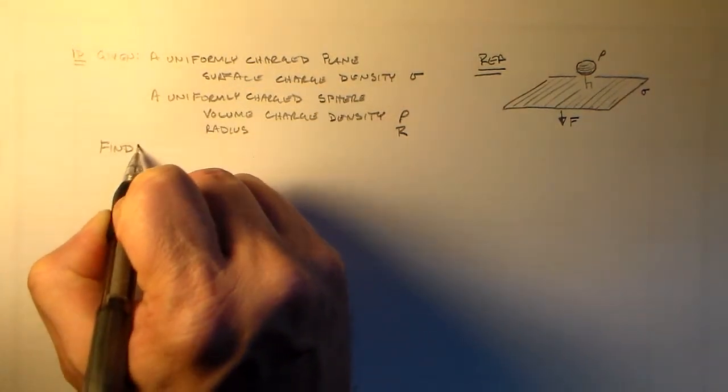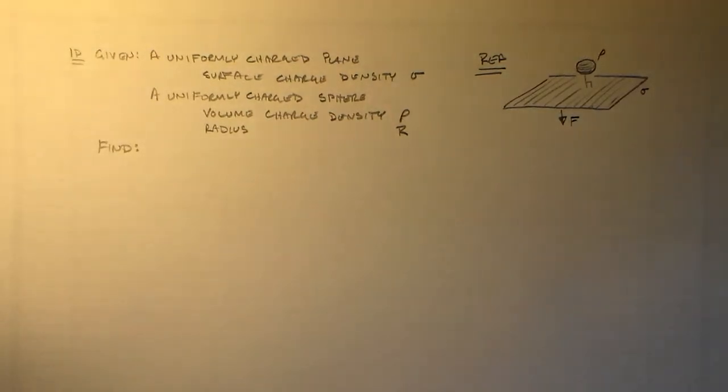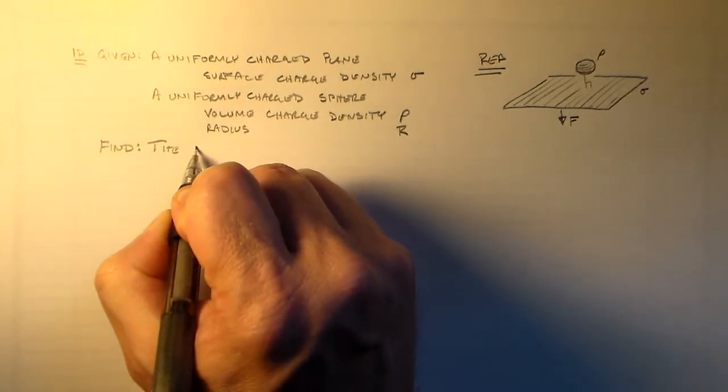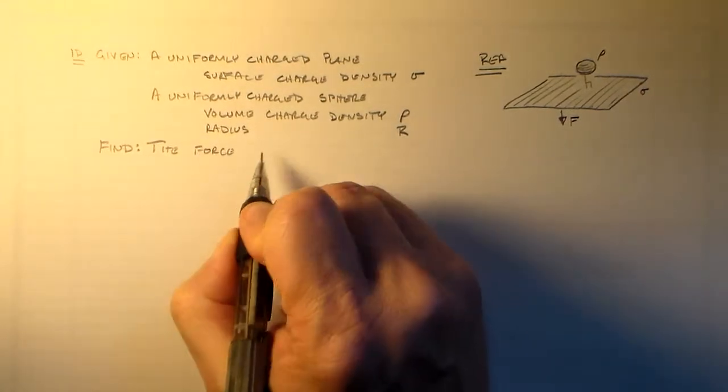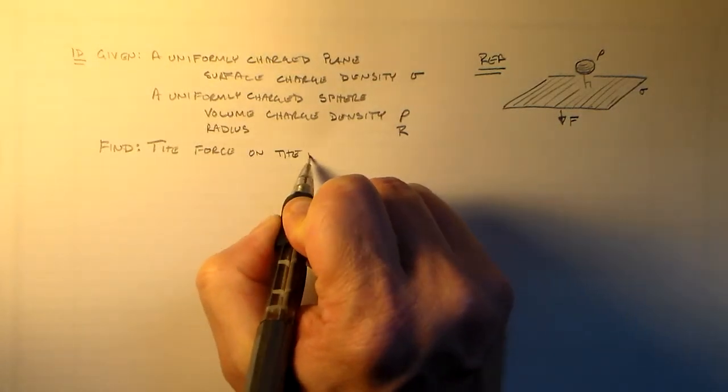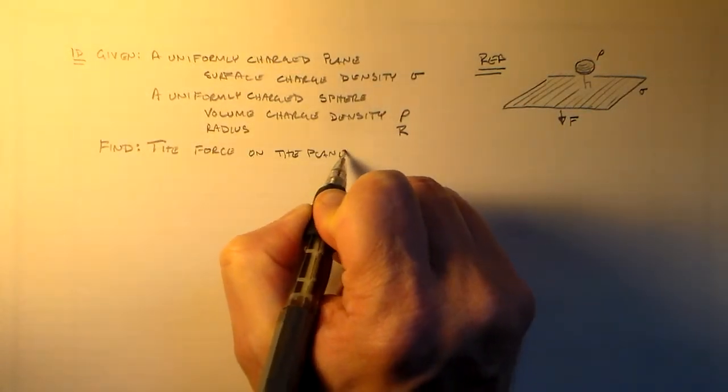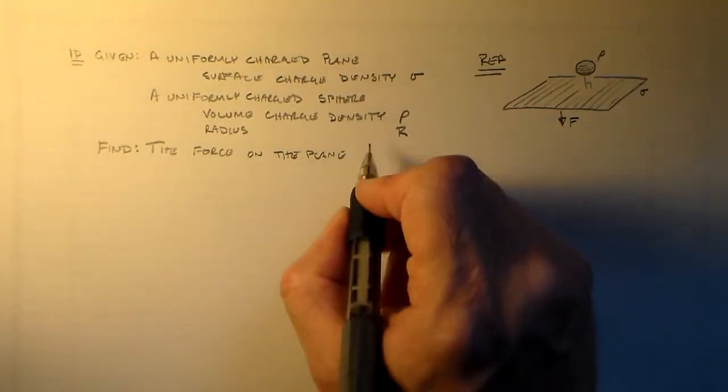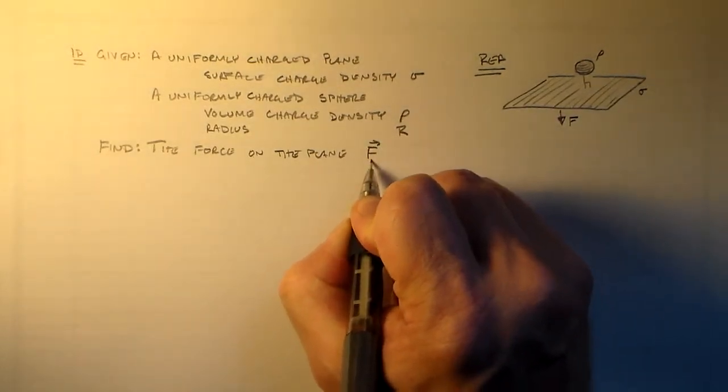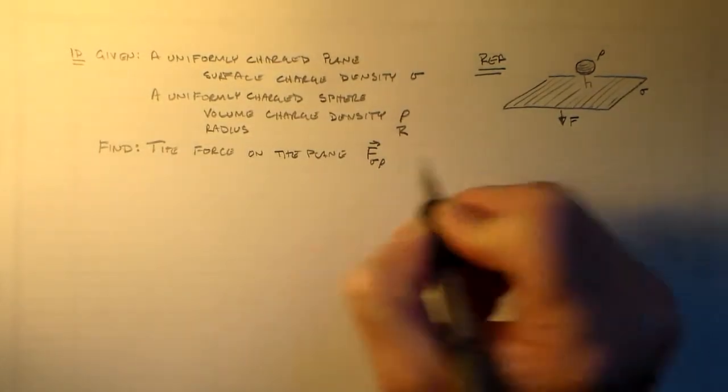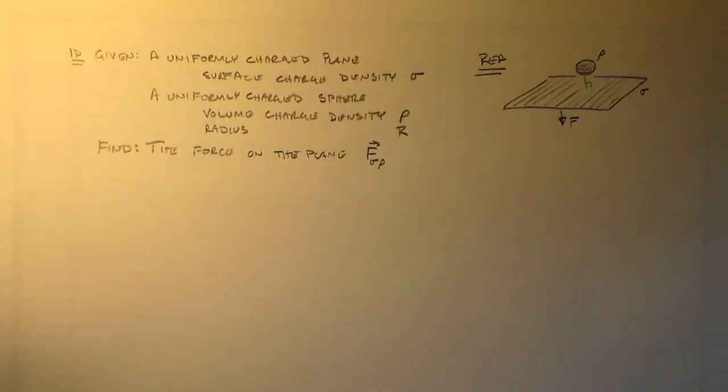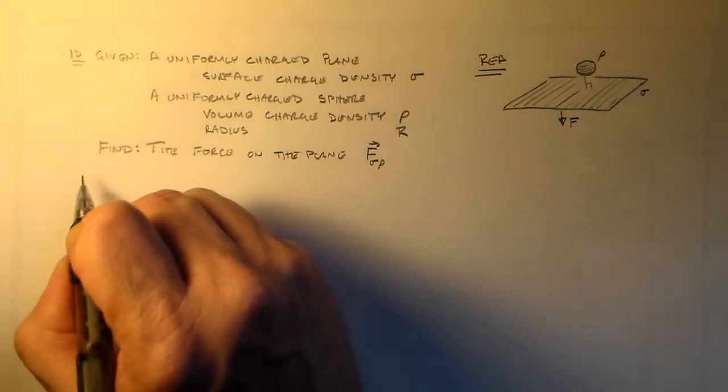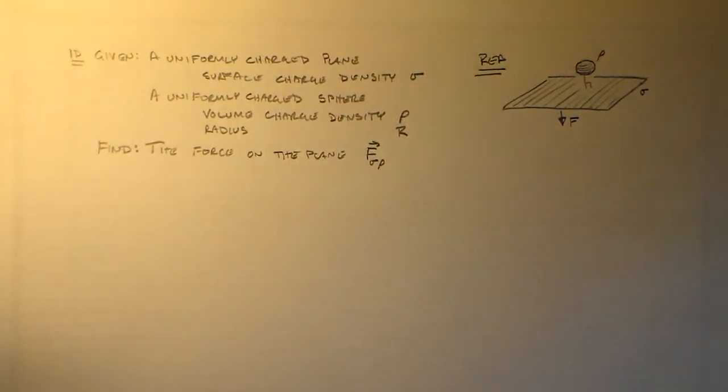And what we want to do is we want to find the force on the plane. I'm perfectly willing to just label the plane sigma and label the sphere rho. So that's the force on the plane from the sphere. So how are we going to do that?